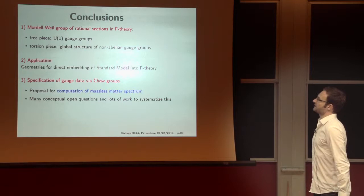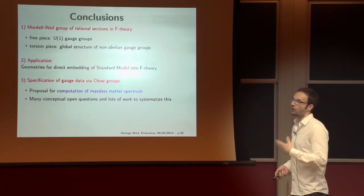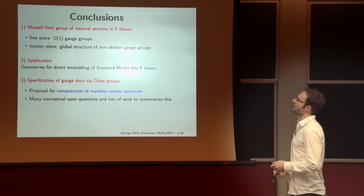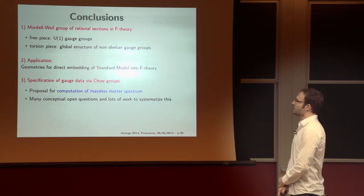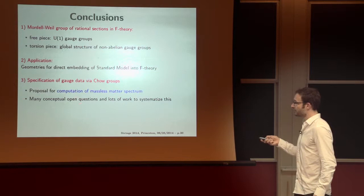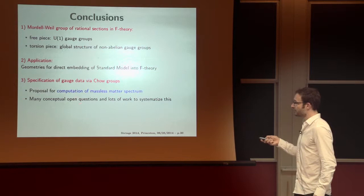So, quick conclusion. Mordell-Weil group of rational sections comes in two pieces. The free piece is in one-to-one with the U(1) gauge groups. The torsion piece describes the global structure of non-abelian gauge groups. This can be applied for model building in GUTs and non-GUTs scenarios. Specification of gauge data by Chow groups. This proposal to compute the massless spectrum. And, of course, there are many conceptual open questions, and then would be a lot of work to systematize with examples. Thanks for your attention.